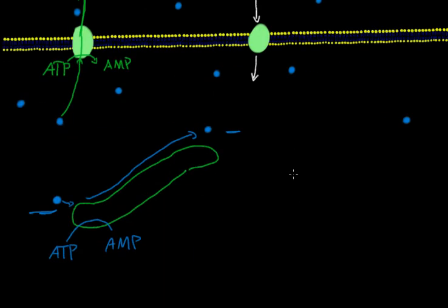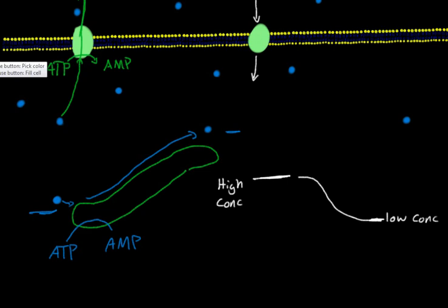We can kind of think of this as a slide. So this will be our high concentration, and it allows the molecule to slide down low. So our molecule will be at the top where it's at the higher concentration and it will just slide right down to the bottom.